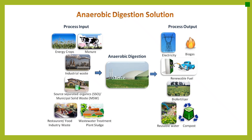This is a summary of the anaerobic digestion solution. We can see that this process can treat a variety of waste, including energy crops, manure from farm animals, industrial waste, source-separated organics from households, municipal solid waste, restaurant or food industry waste, and wastewater treatment plant sludge. After processing this waste, the output of this process is biogas that can be converted to electricity and heat. We can also upgrade it to renewable fuel, recover biofertilizer and compost, and the water portion can be used as reusable water.